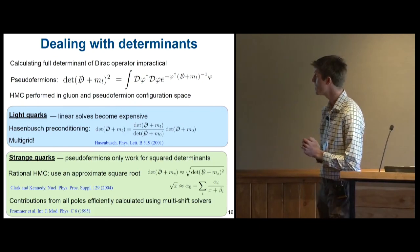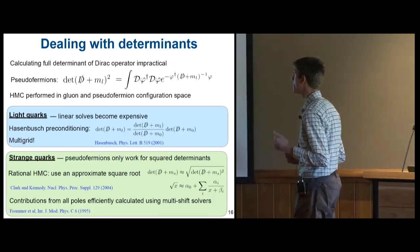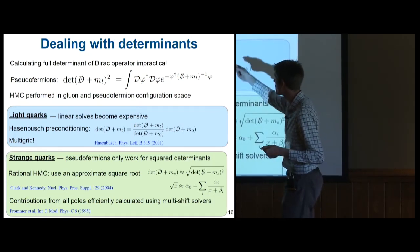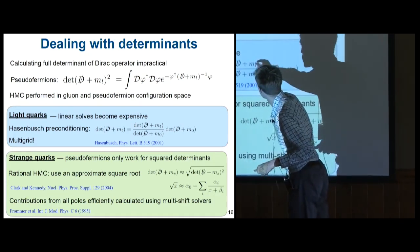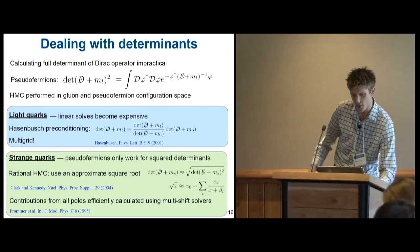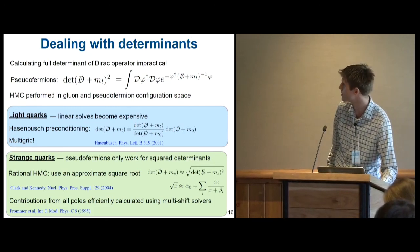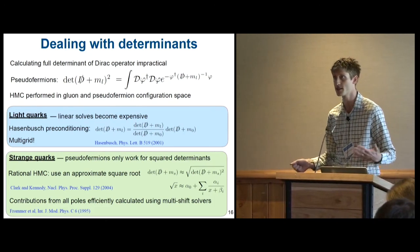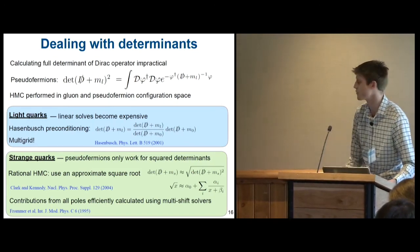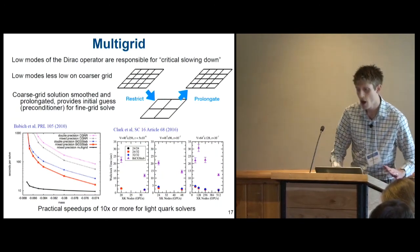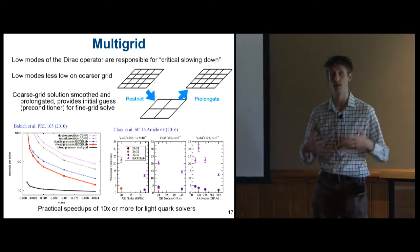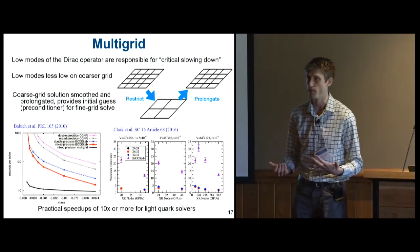And so the standard trick is to rewrite your determinants in terms of some new path integral over some fictitious scalar fields called pseudofermions. Then once we have these, you can use another trick called Hasenbush preconditioning to rewrite your determinants as ratios of determinants where the quark masses will be closer in these than your light quark masses to zero. And for strange quarks, there's yet another different family of tricks for dealing with these determinants and the fact that we really need to take a square root and then do some rational approximation of it.